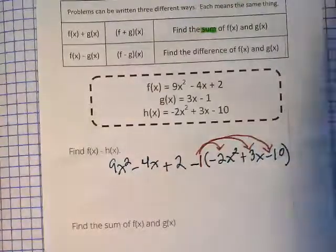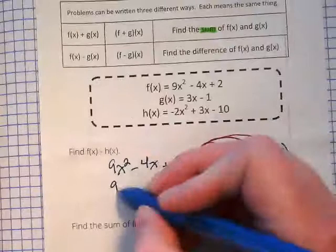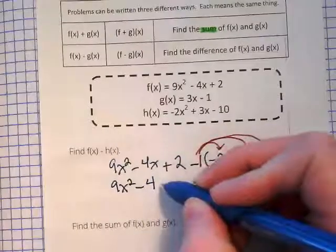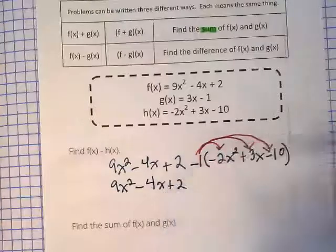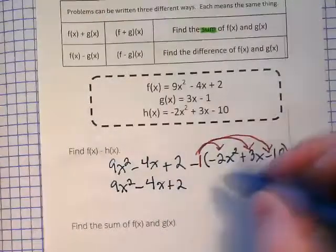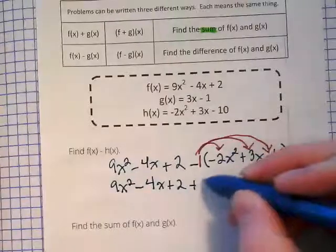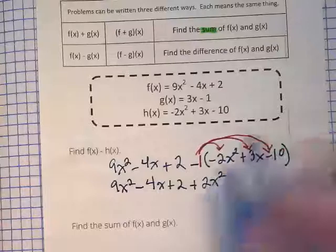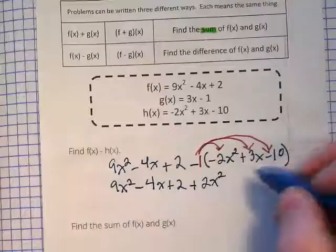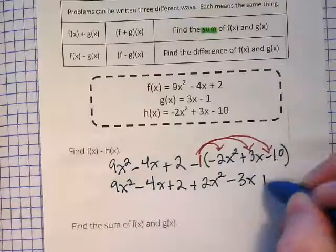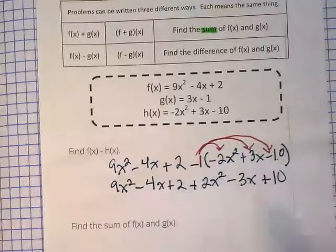Once we've distributed, then we'll be worried about combining like terms, because right now we have 9x squared minus 4x plus 2, and this negative 1 times negative 2x squared is going to become plus 2x squared. Negative 1 times positive 3x will become negative 3x, and that negative 10 becomes a positive 10 when we multiply it by the negative 1.